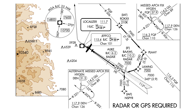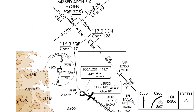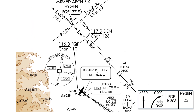For the missed approach, we have two options. Both of them involve the same fix, HYGIEN. On the normal hold, HYGIEN is defined as the intersection of a radial from the GLL VOR and the FQF VOR. FQF is also used for the DME distance. On the alternate, we're still using the GLL VOR, but this time the cross radial is based on the Denver VOR and we're also using Denver for DME. Using the standard procedure, this shows us climbing straight ahead to 6,380, then turning right heading 360. We're going to HYGIEN and, from the direction we're approaching, we'll be doing a direct entry into the hold.